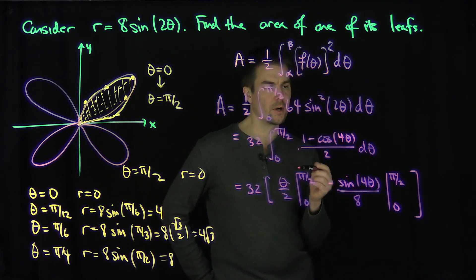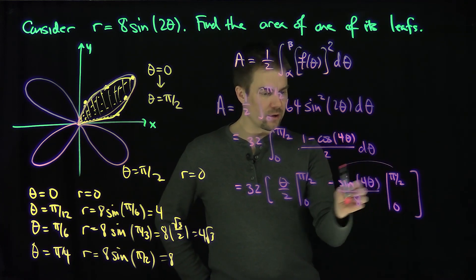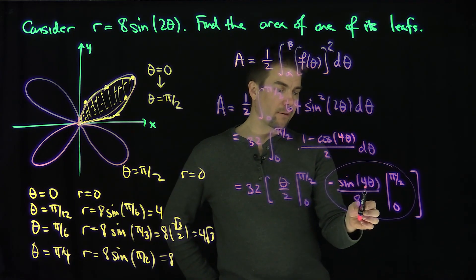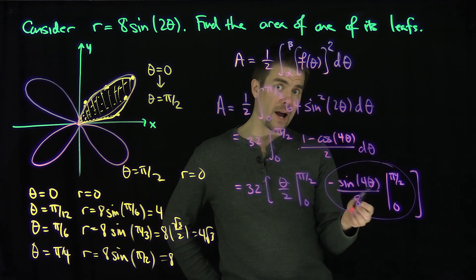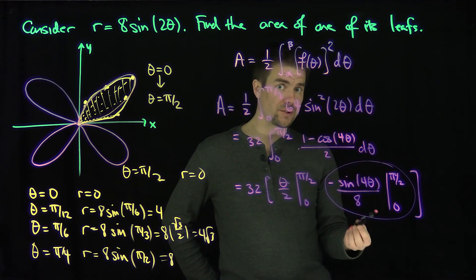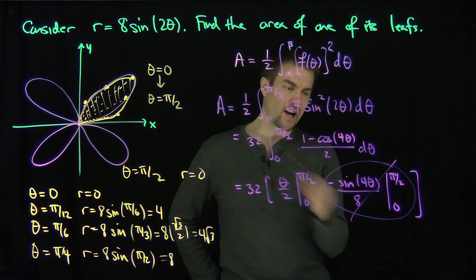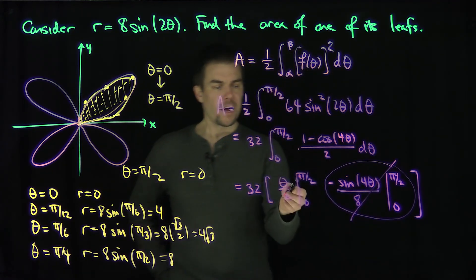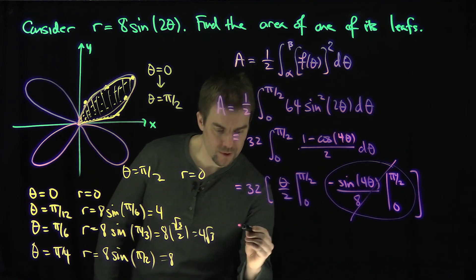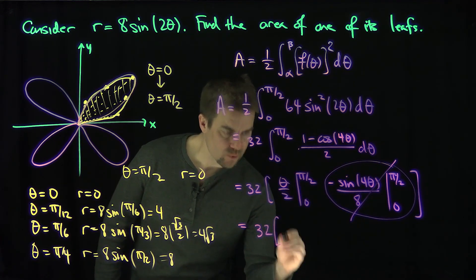So let's see what happens. When I plug in pi over 2, 4 times pi over 2 is 2 pi. The sine of 2 pi is equal to 0. The sine of 0 is also equal to 0. So these ugly terms with the sine of 4 theta are going to vanish. And I'm just going to have pi over 2 over 2. That's pi over 4. So this is going to be 32 times pi over 4.